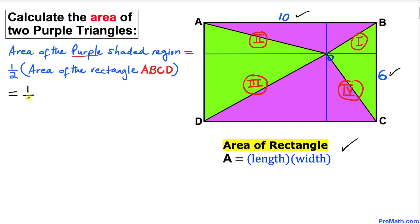One-half times the area of the rectangle is 10 times 6. When we simplify everything, 60 divided by 2 turns out to be 30 square units.